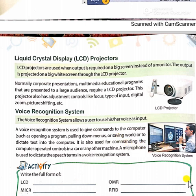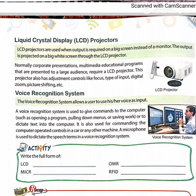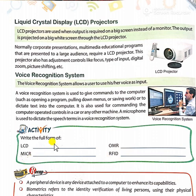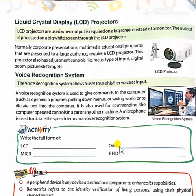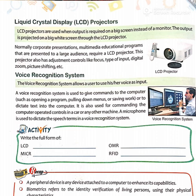Now the chapter is being completed. Here are some full forms as an activity: LCD stands for liquid crystal display, OMR stands for optical mark reader, MICR stands for magnetic ink character reader, and RFID stands for radio frequency identification. These are all the peripheral devices we have seen in this chapter — a short introduction to devices which enhance the capacity and capability of a computer.